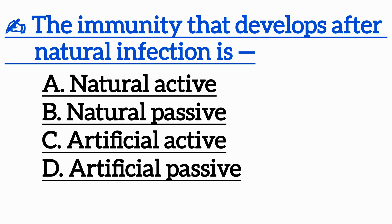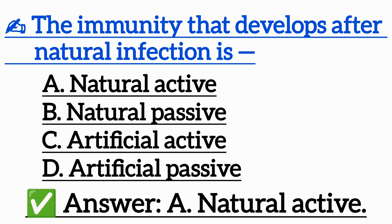Question 15: The immunity that develops after natural infection is — Option A: Natural active, Option B: Natural passive, Option C: Artificial active, Option D: Artificial passive. Correct answer is Option A: Natural active.